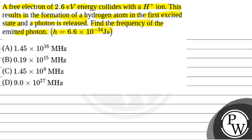H is equal to 6.6 into 10 to the power minus 34 joule second. We will solve this question. The key concept used will be frequency given by C by lambda, where lambda is the wavelength.